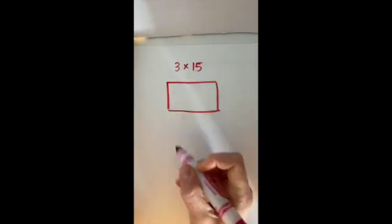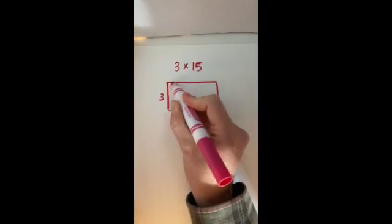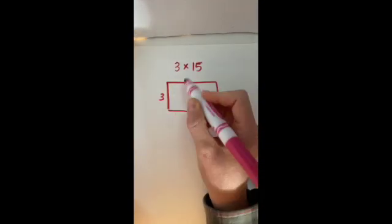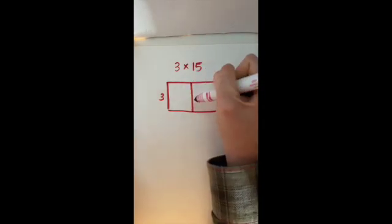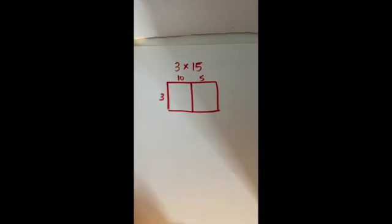Let's say we're multiplying 3 by 15. I'm going to draw a rectangle and draw 3 as my first dimension. But that second dimension of 15 is pretty big, so I'm going to split it up into two parts. I'm going to split it into 10 and 5.